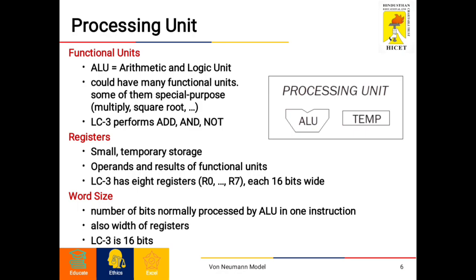Registers provide small temporary storage for operands and results of functional units. There are 8 registers, R0 to R7, each 16 bits wide. The next consideration is word size — with one instruction, the ALU can process a fixed number of bits normally.